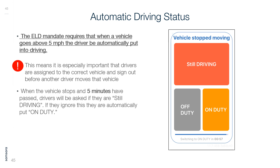Automatic Driving Status: The ELD mandate requires that when a vehicle goes above 5 miles per hour, it be automatically put into driving. It is especially important that drivers are assigned to the correct vehicle and sign out before another driver moves that vehicle. When the vehicle stops and 5 minutes have passed, drivers will be asked if they are still driving. If they ignore this, they are automatically put on duty.